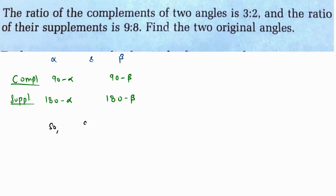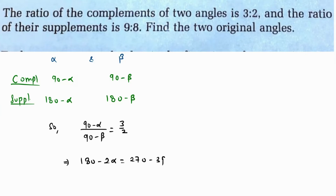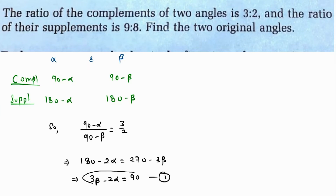We are given that the ratio of their complements is 3 to 2, so (90 minus alpha) over (90 minus beta) equals 3 over 2. Cross-multiplying gives 180 minus 2 alpha equals 270 minus 3 beta. Rearranging by adding 3 beta to both sides and subtracting 180 from both sides, we get our equation 1: 3 beta minus 2 alpha equals 90.